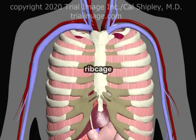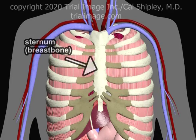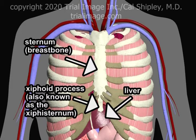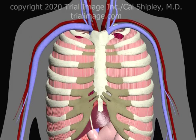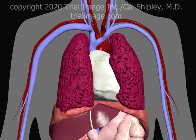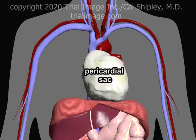Let's start by taking a look at some relevant cardiac anatomy. In the front or anterior aspect of the ribcage, the sternum acts as an anchor to which all ribs and rib cartilage attach. Projecting from the bottom of the sternum is the xiphoid process, also known as the xiphi sternum. Lying just behind the xiphoid process is the left lobe of the liver. Removing the ribcage reveals the lungs, and between the lungs is the pericardial sac, which contains the heart.